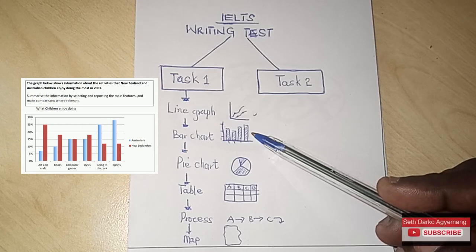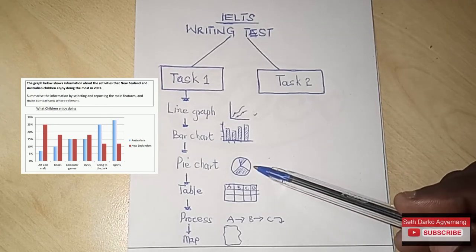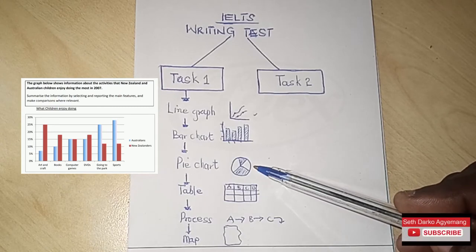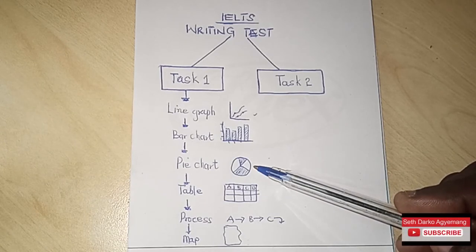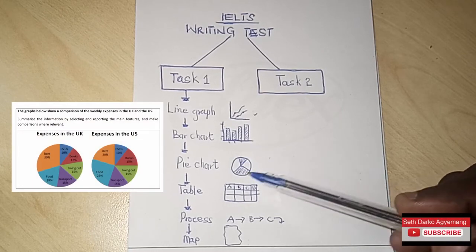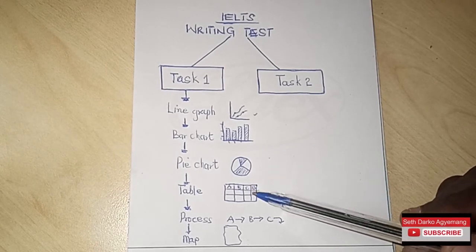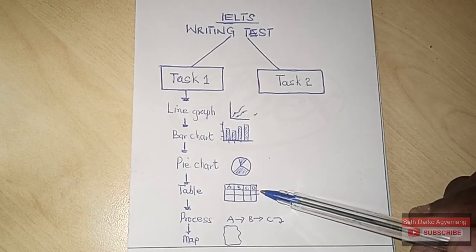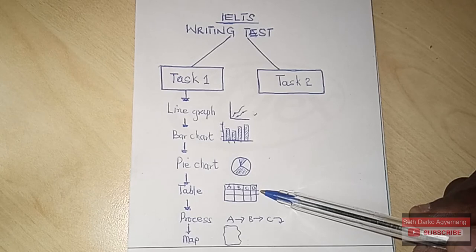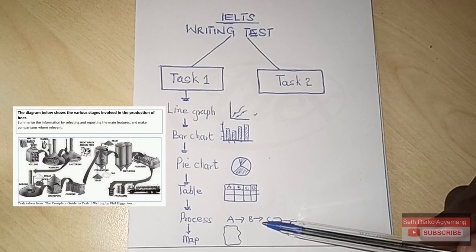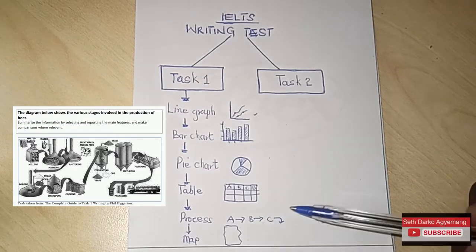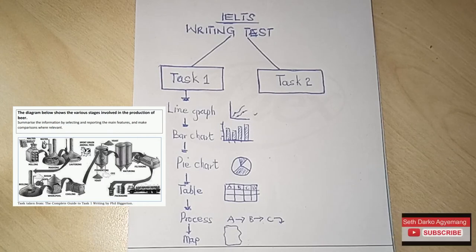If you are not well-versed in the writing test, you don't have to worry — just continue watching my videos because I'll be going step by step to help you understand it fully. With a pie chart, you'll be given a pie chart where you are to talk about certain items within it. You'll also be given a table to describe. I was fortunate to get a table, and it was actually easy. Then there's the process, which involves telling how certain things are done.